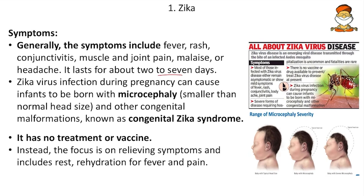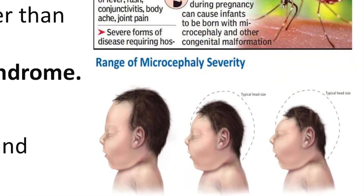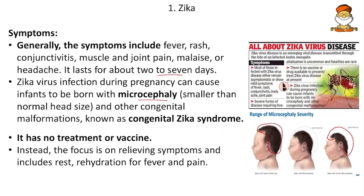Zika virus infection during pregnancy can cause infants to be born with microcephaly — the actual head will be of a normal size but the microcephalic head is very much smaller. Along with that, other congenital malformations are known as congenital Zika syndrome. Importantly, Zika has no treatment or vaccination — mark this as very important.